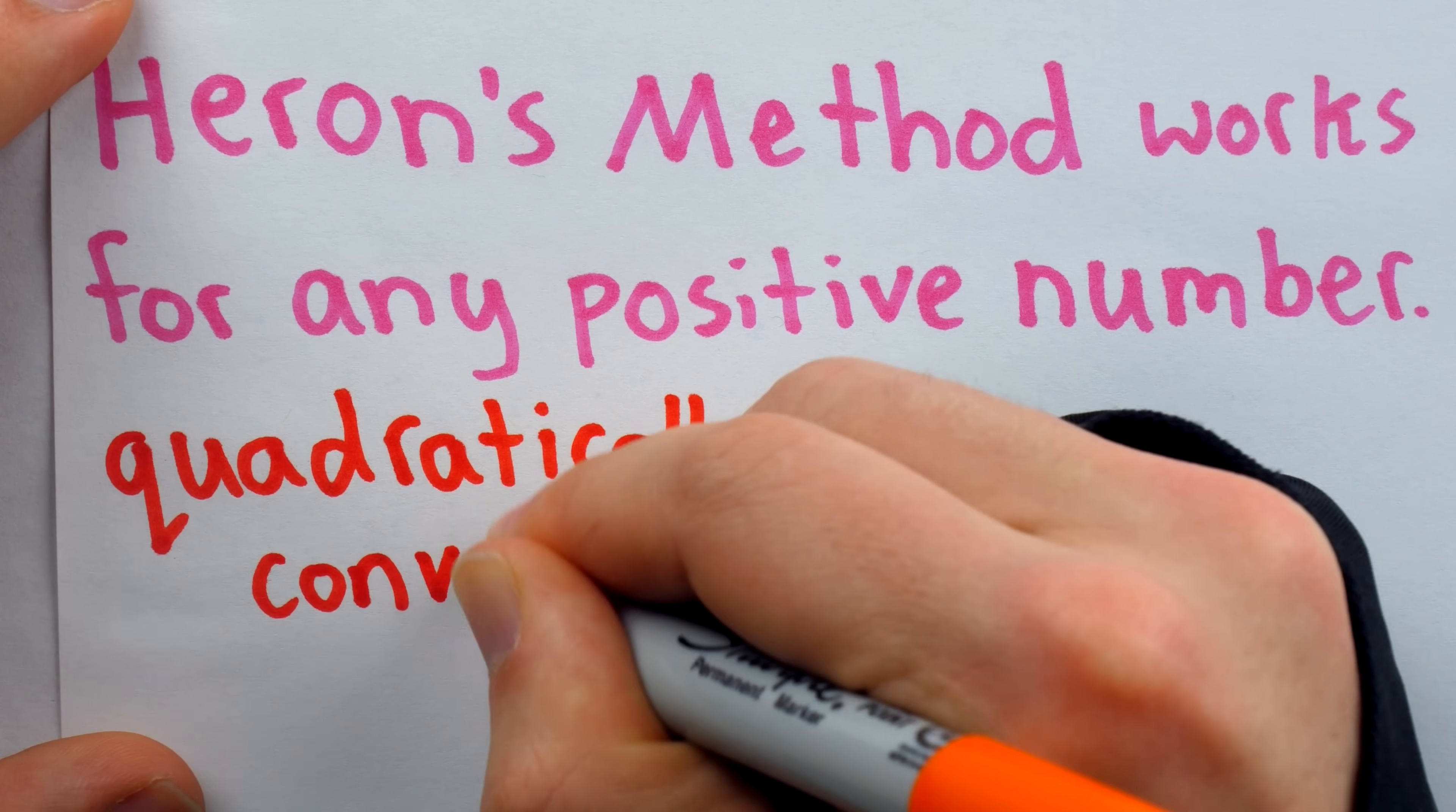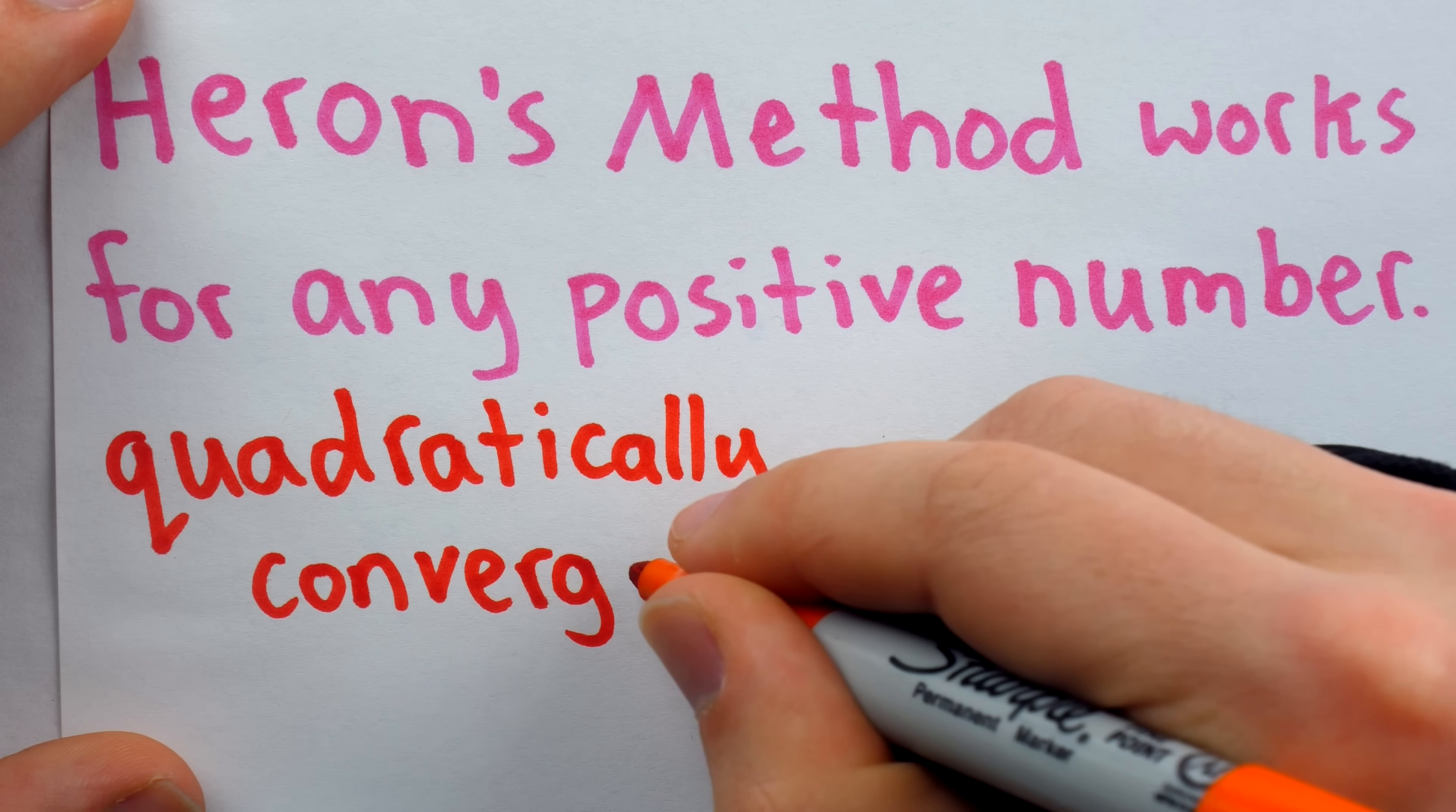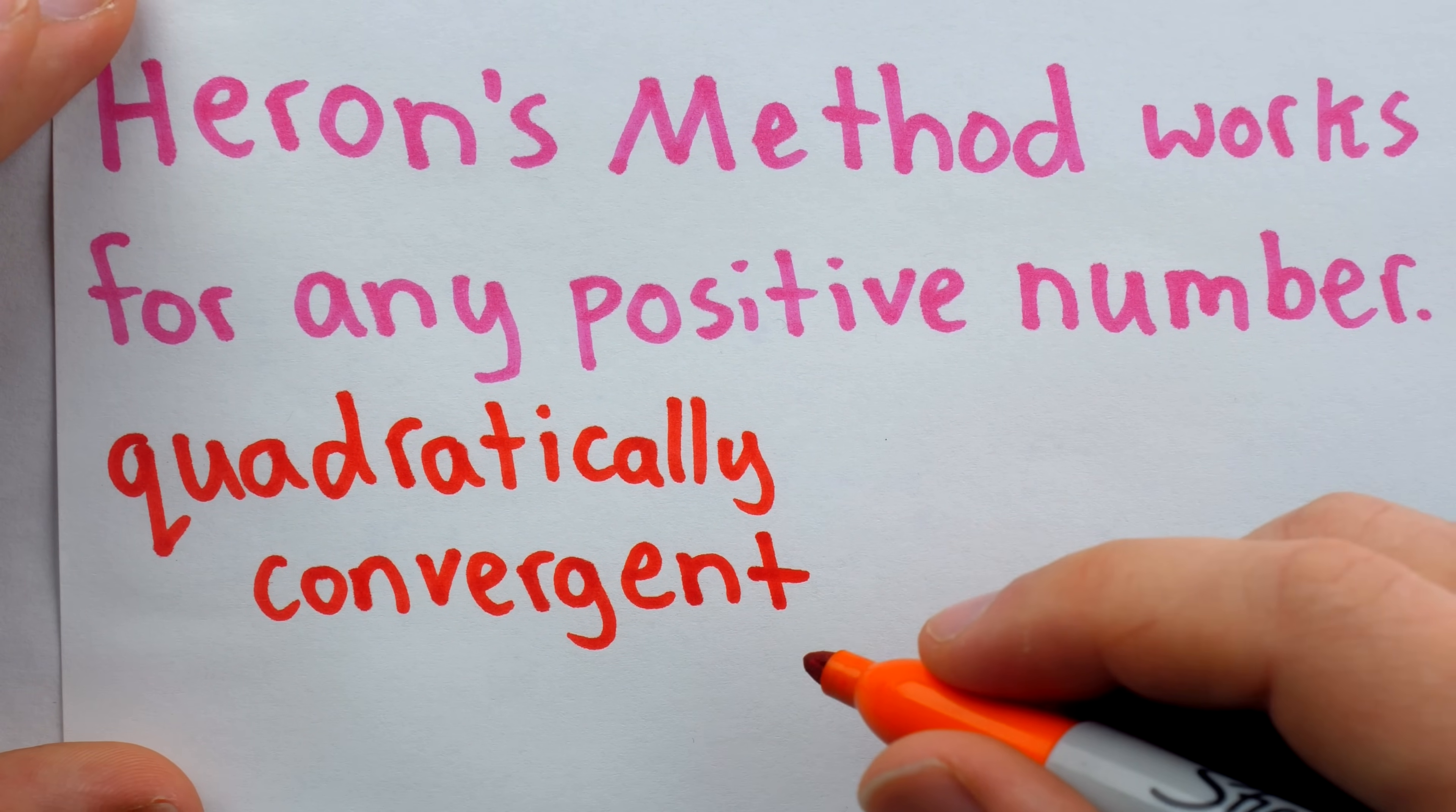Herron's method is what we call quadratically convergent. This means it's a very good method, and with each iteration, the number of accurate digits will roughly double.